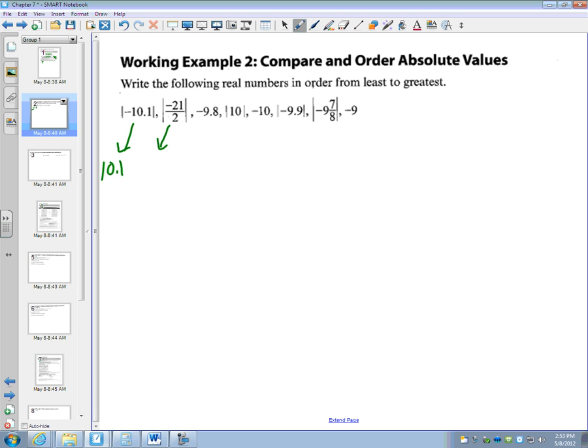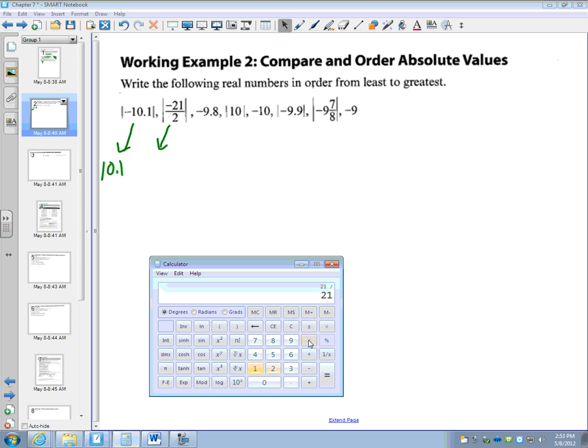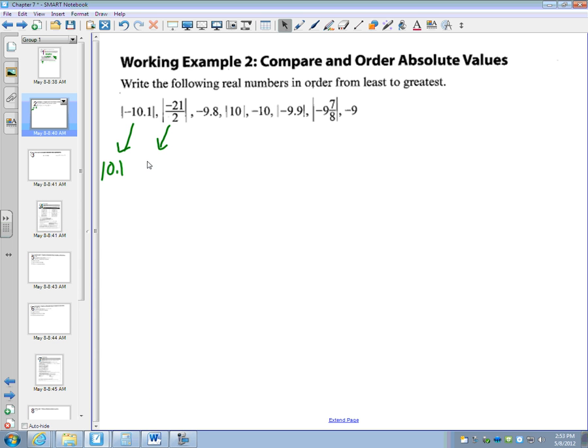The absolute value of negative 21 over 2. I'm going to grab out my calculator and find out what 21 divided by 2 is. That's 10.5. So it's negative 10.5. The absolute value of negative 10.5 is 10.5.